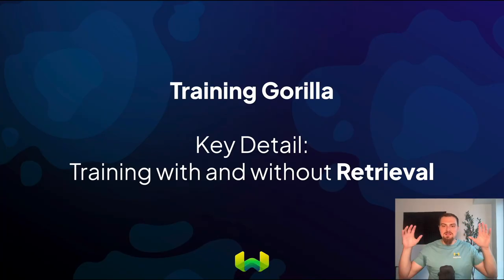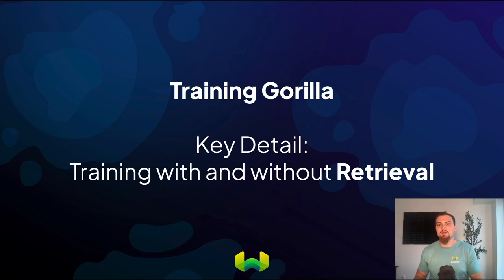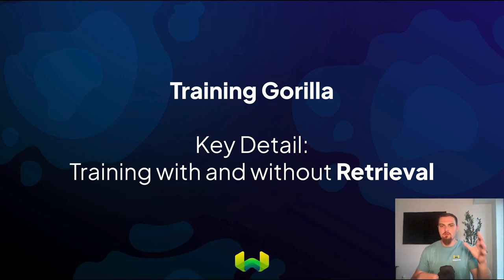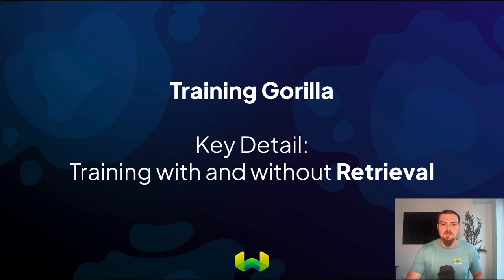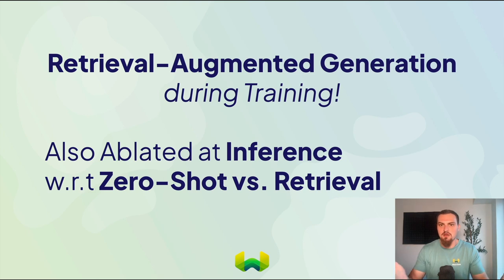Now my favorite detail — training Gorilla and ablating training with and without retrieval. Most retrieval-augmented generation today trains the language model without retrieval, then gives it retrieval at inference time. What Gorilla is doing is also training with retrieval and collecting experimental data on whether this is worth doing. They're ablating training with and without retrieval as well as at inference time with and without retrieval. Inference refers to making predictions with a trained model. Zero-shot means no retrieval training; retrieval means trained with retrieval.